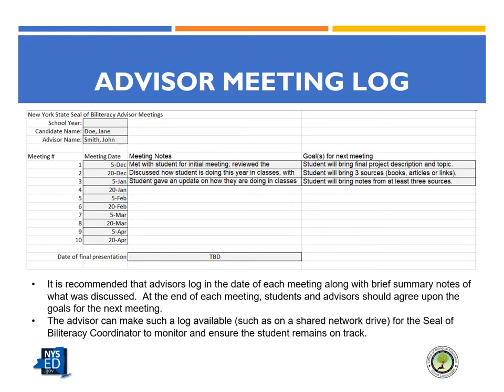This is a sample advisor log created with Excel. The advisor documents the date of each meeting, any notes for the meeting, and the goal for the subsequent meeting. It is recommended that the Seal of Biliteracy coordinator uploads this Excel workbook to a shared network drive. Each tab in the workbook can be for a Seal of Biliteracy candidate. Advisors can update the relevant sheets after each meeting.